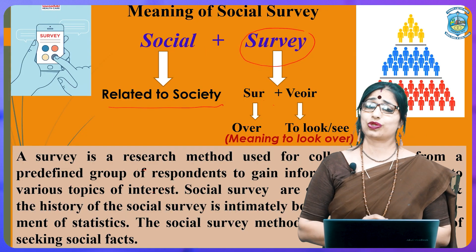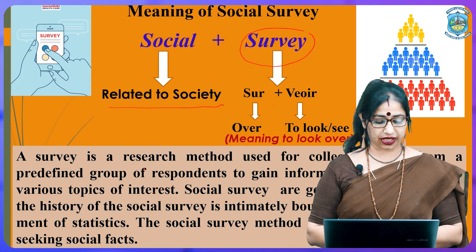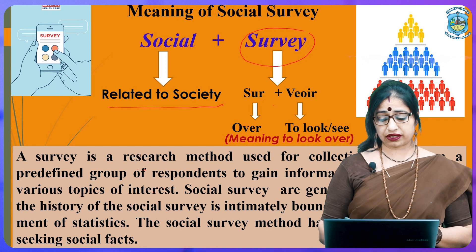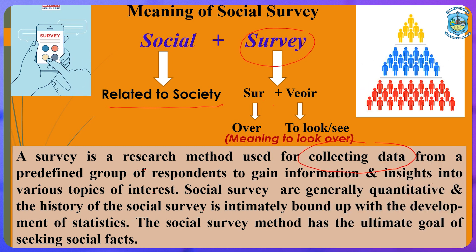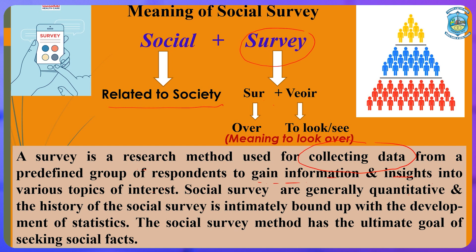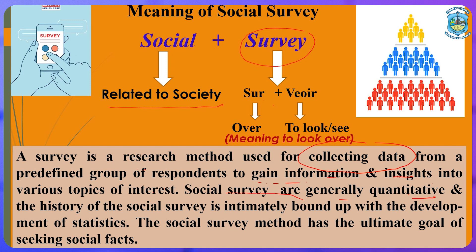A general definition of social survey: a survey is a research method for collecting data from a predefined group of respondents to gain information and insight into various topics of interest or problems. Social surveys are generally quantitative, and the history of the social survey is intimately bound up with the development of statistics.